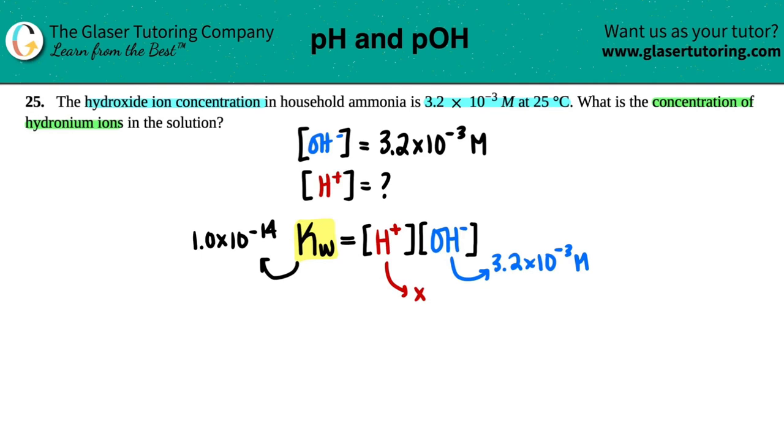So now, all we're going to do is just plug it in. 1.0 times 10 to the negative 14th equals H+, times OH minus. We'll say this is X, and then the OH minus, the basic component, is 3.2 times 10 to the negative 3rd. We're going to solve for X.